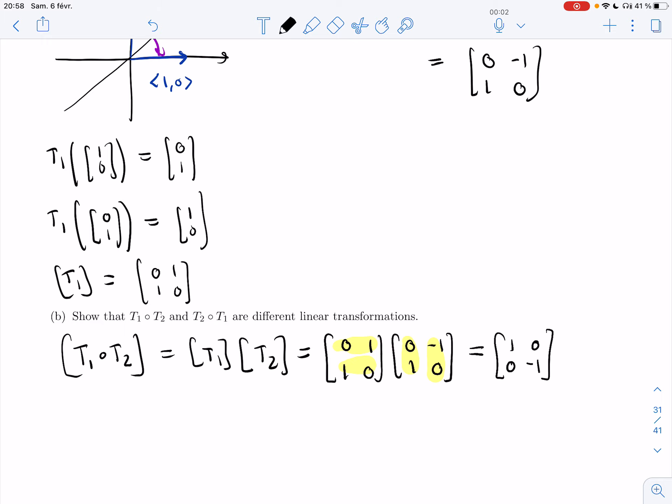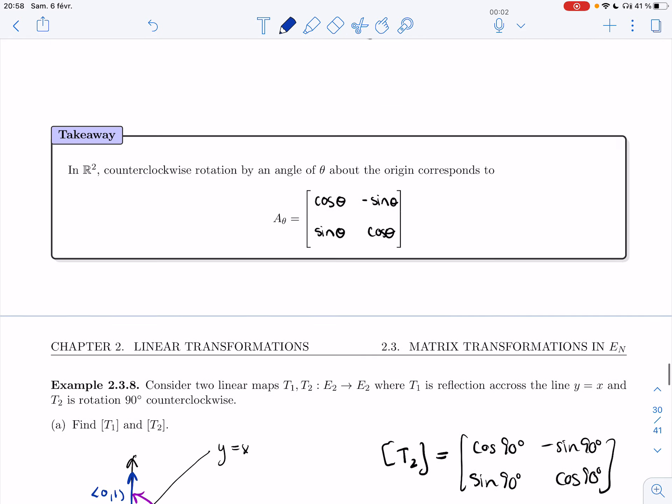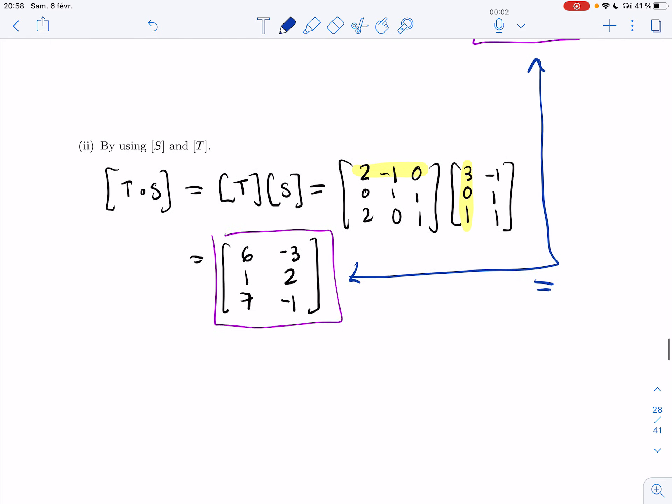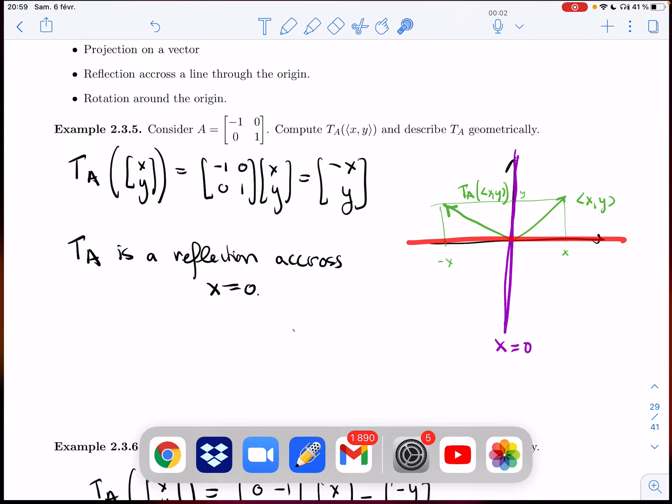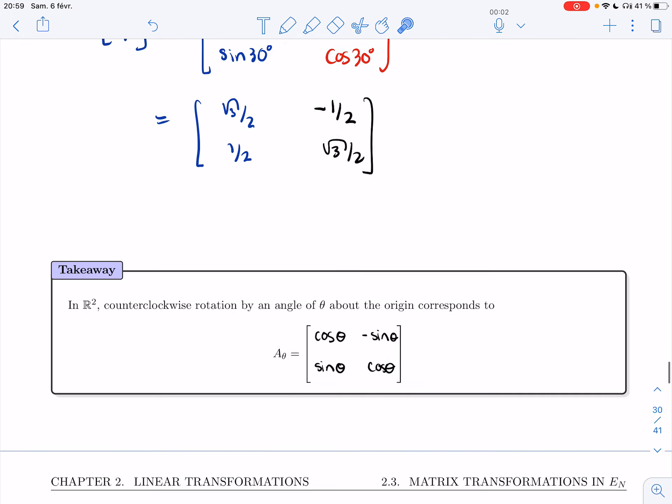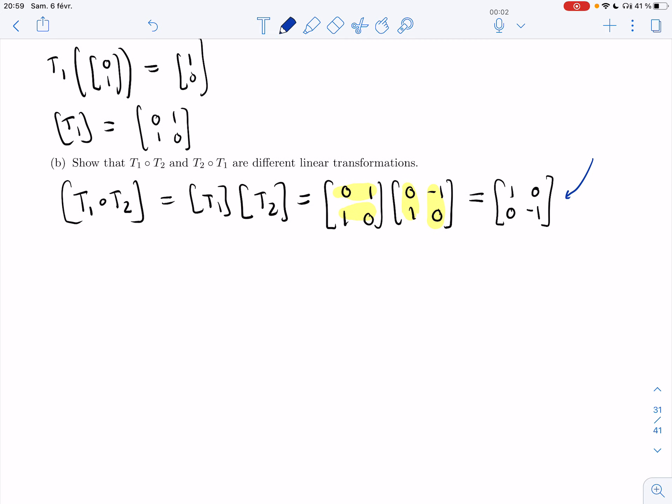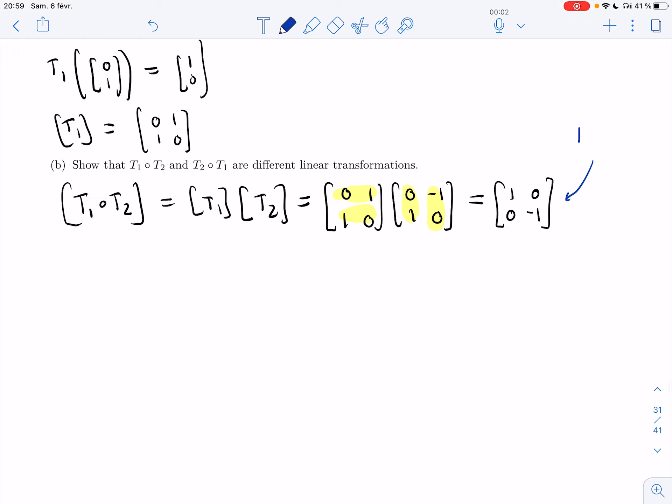And if you really want to know geometrically what this is, it looks a lot like the first example we did. Except instead of having the x switch sign, it's the y that switches sign, so it's reflection across y equals 0. It's not part of the question, so you don't have to prove it, but you would know how. So this is reflection across the x-axis, y equals 0.